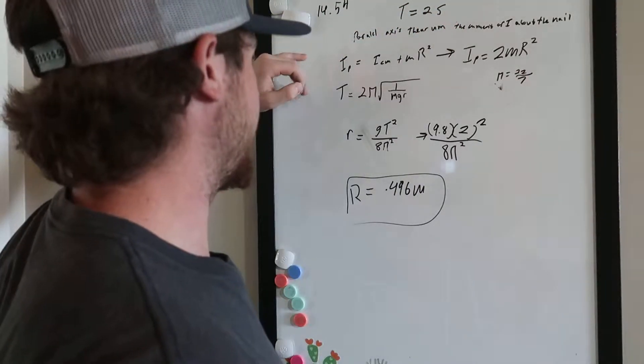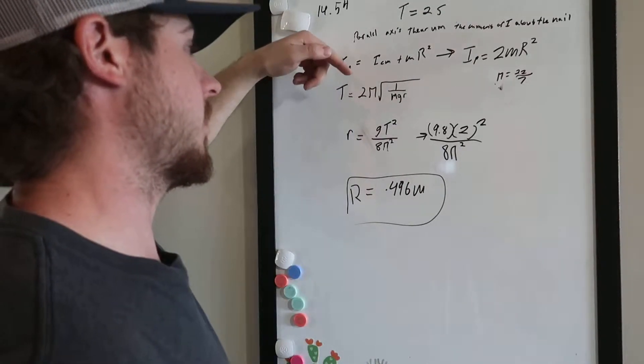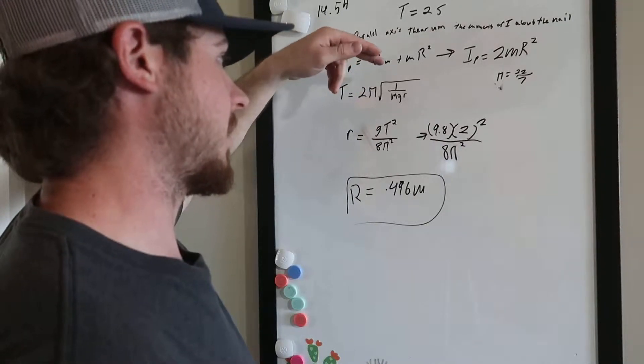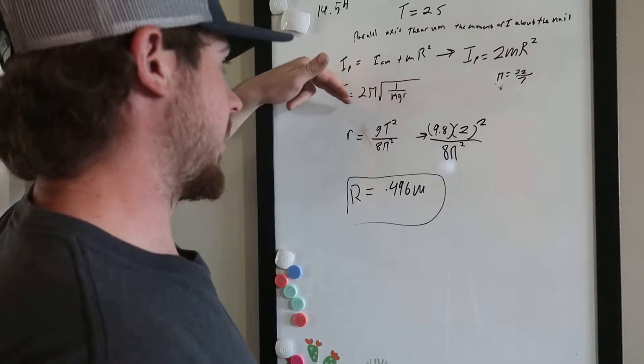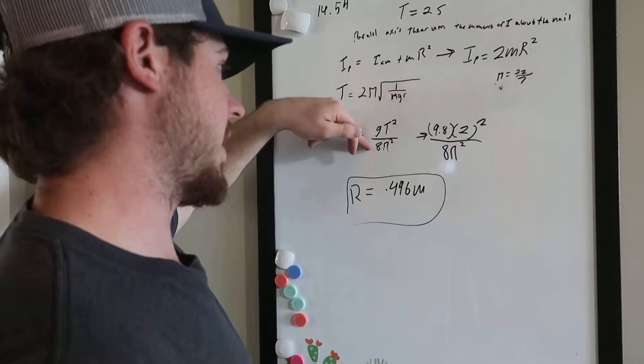And so we can find the period by using this equation here: two pi multiplied by the square root of I over mass times gravity times the radius. And then if we write this in terms of r, the radius, we get gravity times the period squared over 8 pi squared.